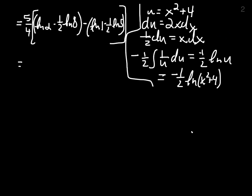The natural log of 1 is 0, so we're looking at 5 fourths the natural log of 2. Let's call it minus the natural log of 8 to the half power plus the natural log of 5 to the half power.